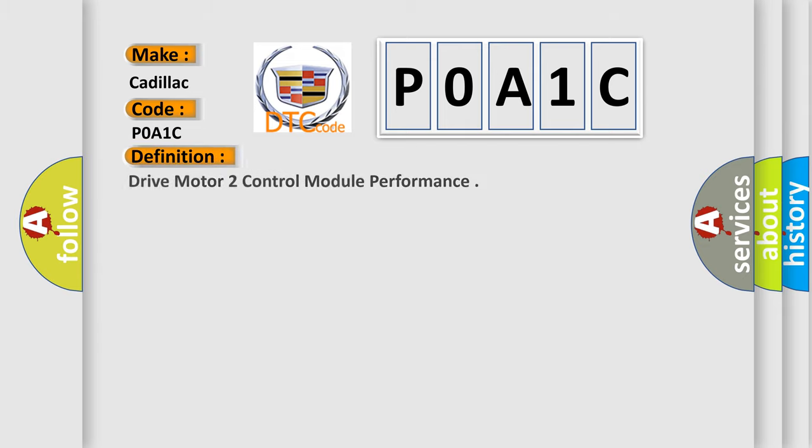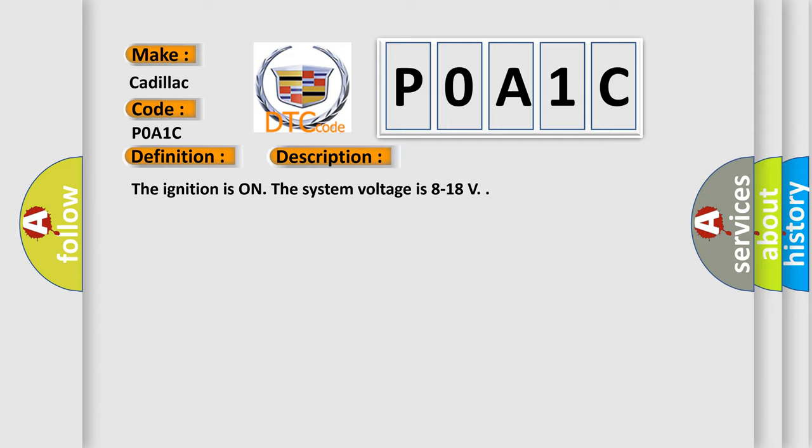The basic definition is: Drive motor to control module performance. And now this is a short description of this DTC code. The ignition is on, the system voltage is 8 to 18 volts. This diagnostic error occurs most often in these cases: The control module has detected an internal malfunction.